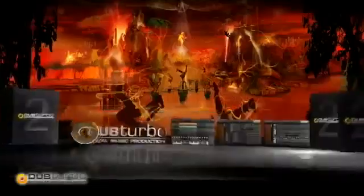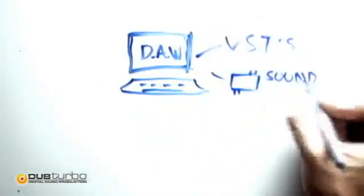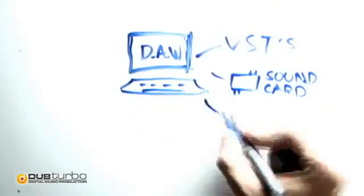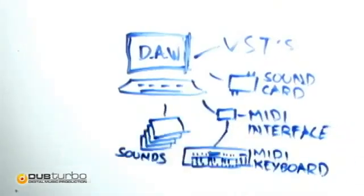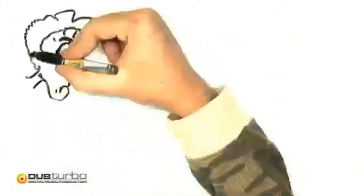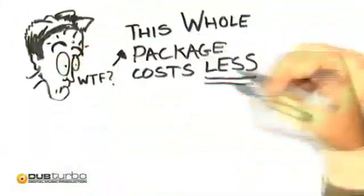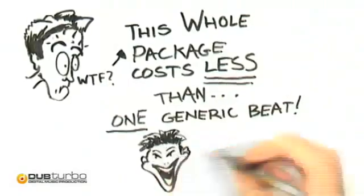What used to cost thousands — meaning a supercomputer, big name DAW software, VSTs, pro sound card, MIDI interface and keyboard, samples and kits, monitors, a mixer, wires, and more — is now all available for less than the cost of just one average royalty-free beat or kit.